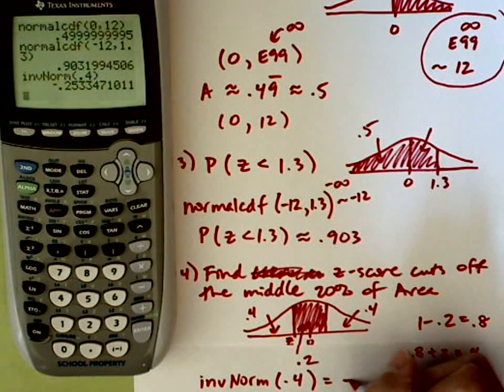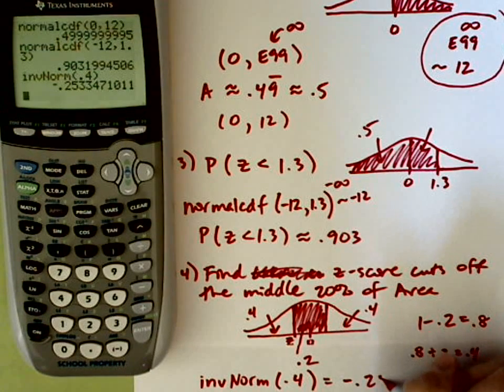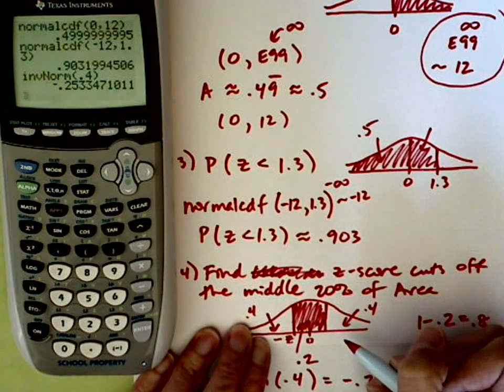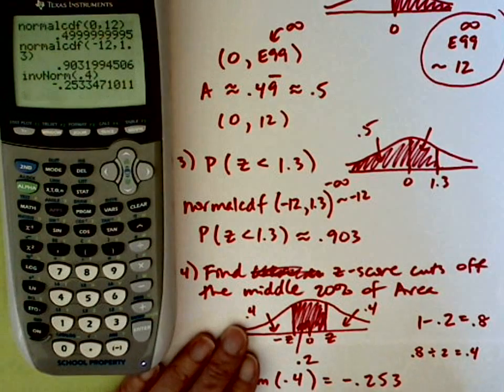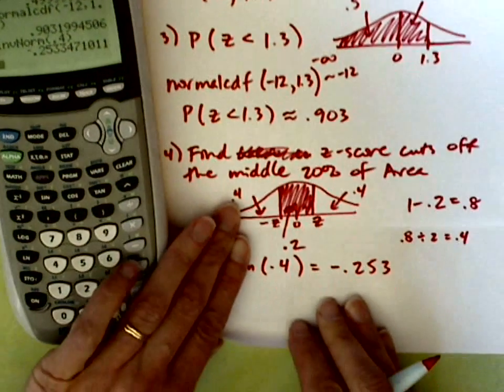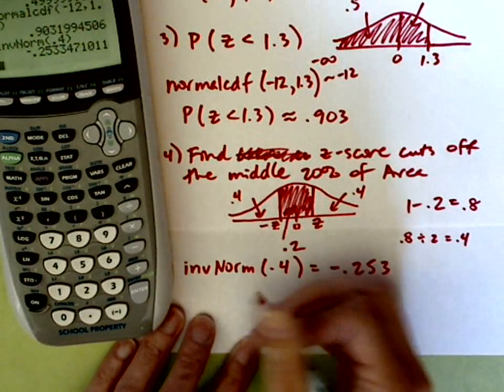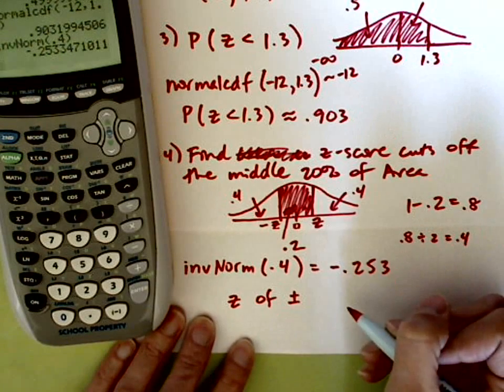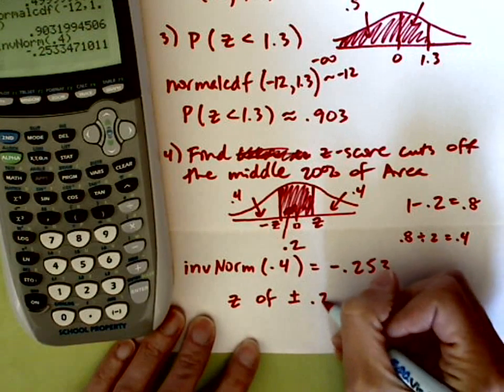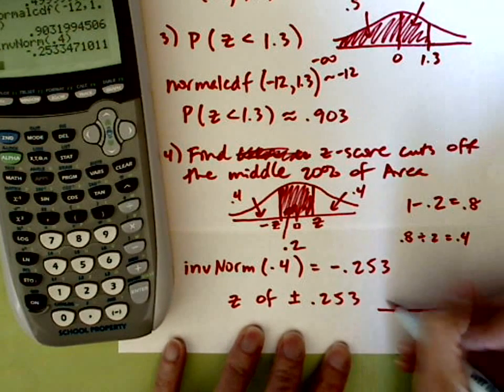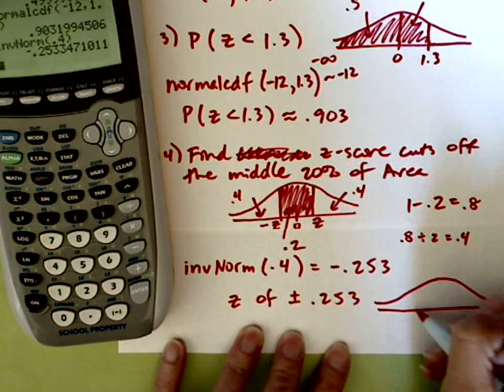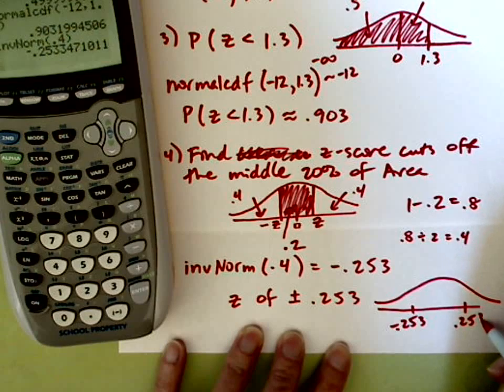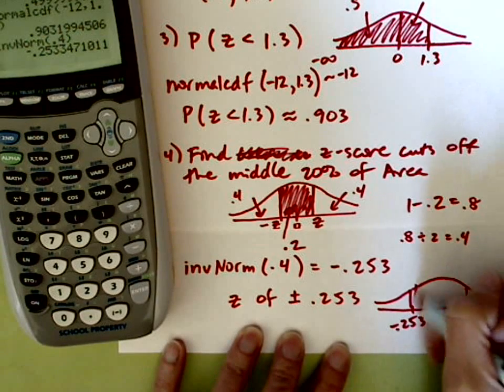And I get a negative z-score. That's what I was expecting. I get negative 0.253. I remember I was looking for two z-scores. One on the left, which is a negative z-score. And a z-score on the right, which is going to be the positive of that value. So my z-scores that cut off those values, so I have z-scores of plus and minus 0.253. For that middle 20%, we're looking at a negative 0.253 on the left and a positive 0.253 as the z-score on the right.